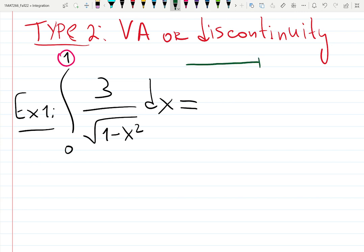So have a sketch of the interval. We are working on from zero to one, but there is a vertical asymptote at one, because if you plug one, you'll have division by zero. It's a vertical asymptote.